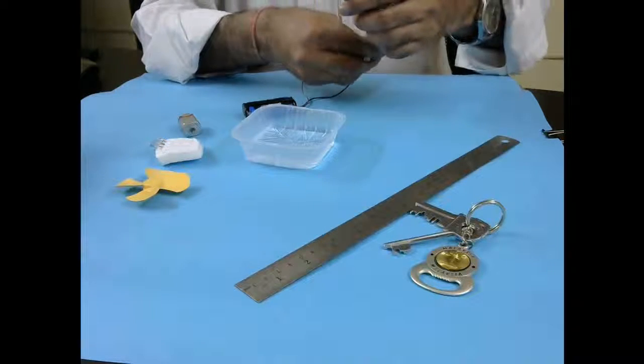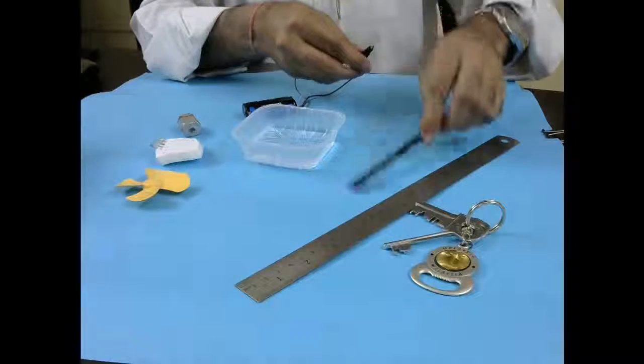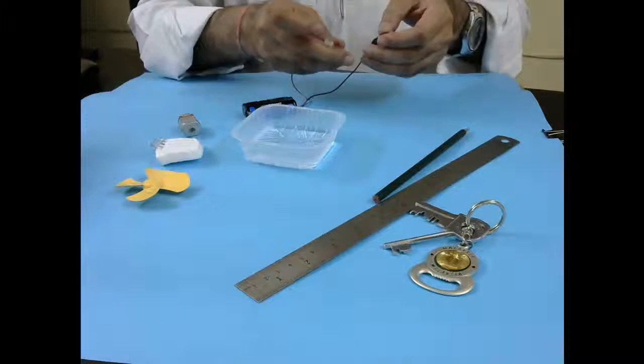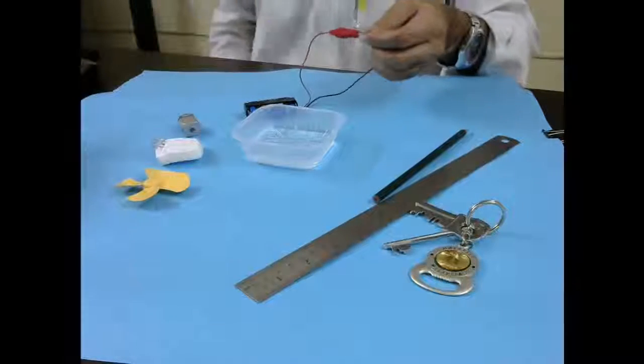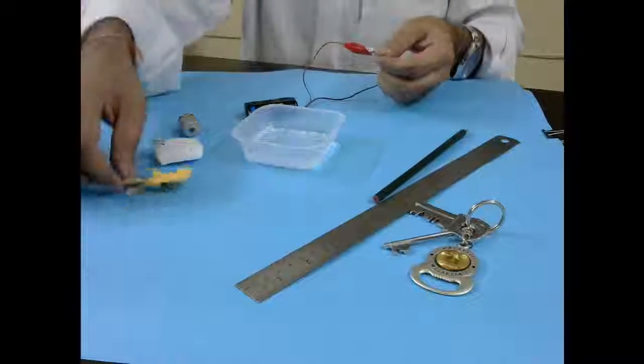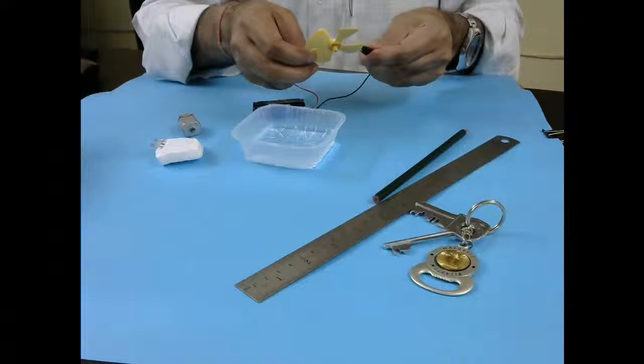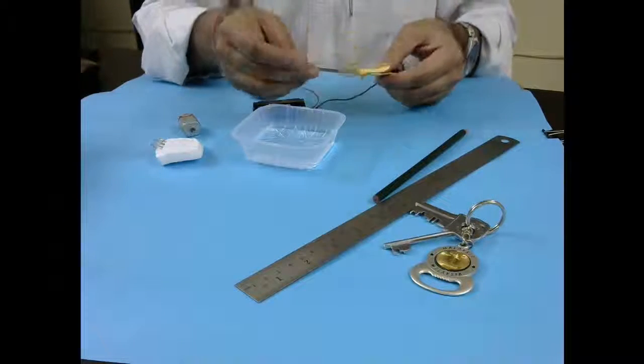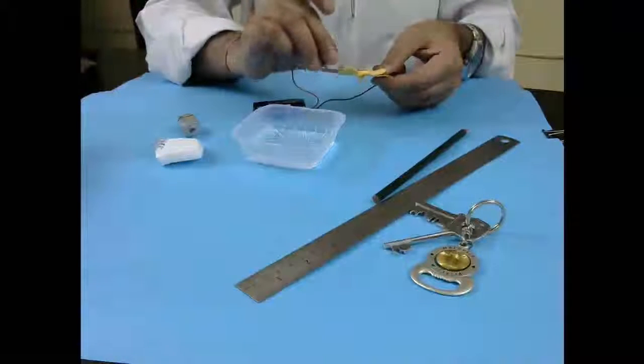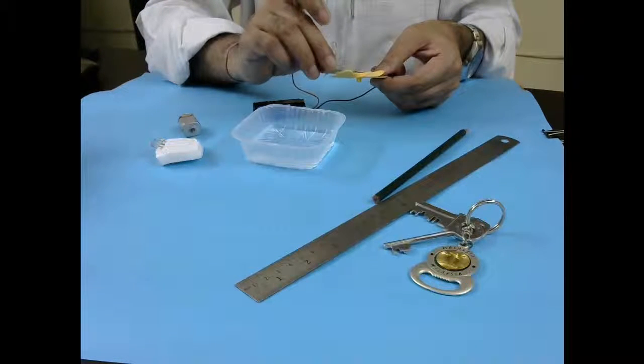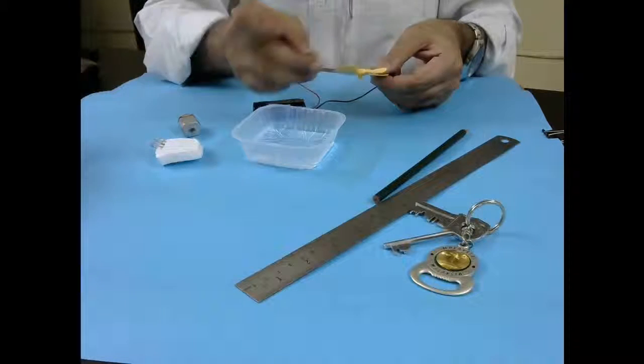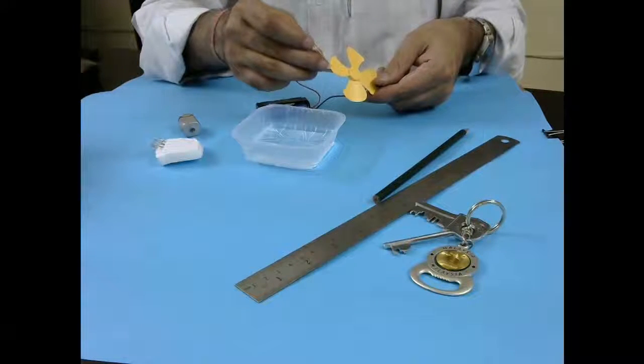So what are the insulators? They are the materials which do not allow conducting electricity. So for example this plastic fan if I connect one side here and then try to connect it here, the LED is off. It does not light up which means this plastic fan is a bad conductor or an insulator.